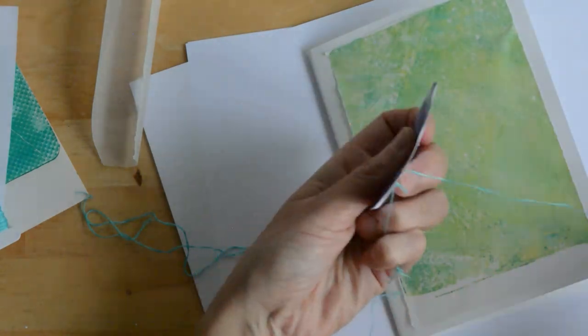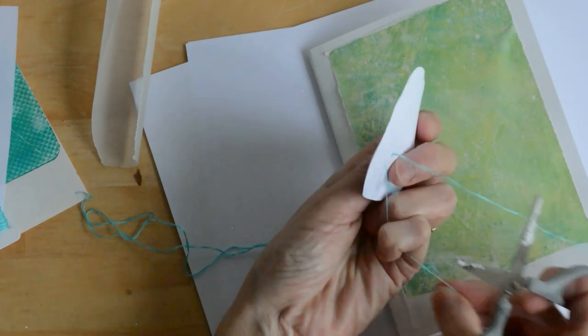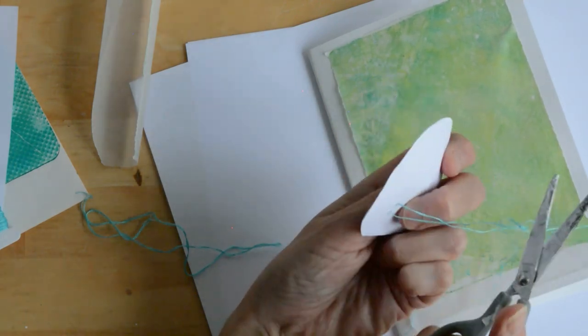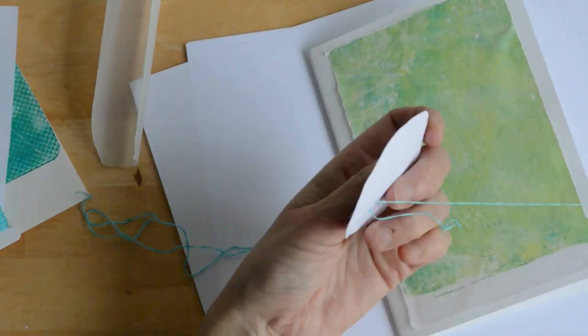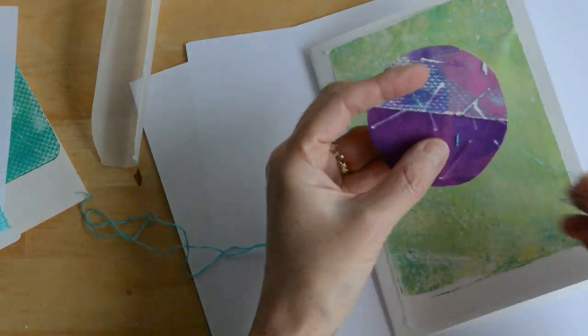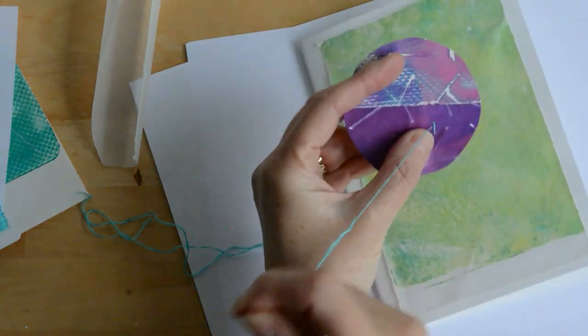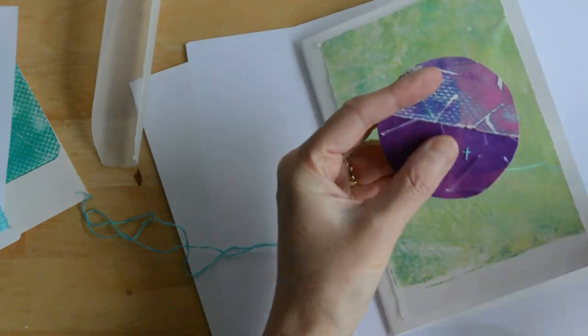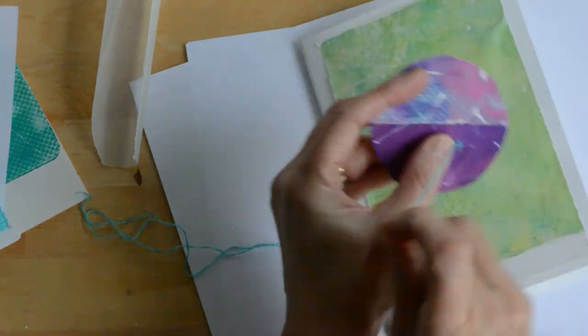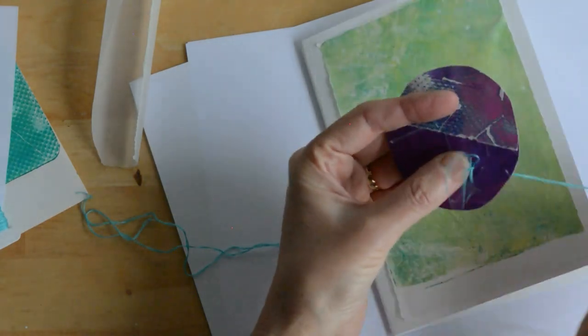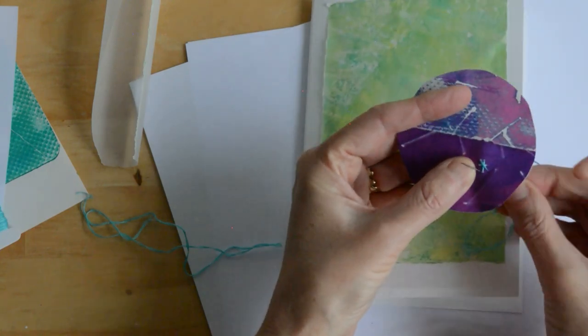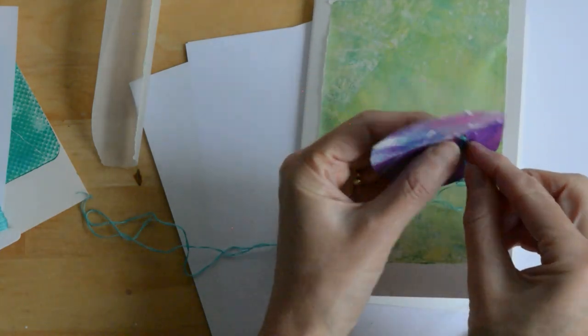Thread your needle with three strands of embroidery floss, tie a knot, and come through from the back so you have your knot on the back of the bauble shape. Basically, I'm doing a vertical then a horizontal running stitch—simple stitch—and then two diagonals across the top to create a very simple star shape.